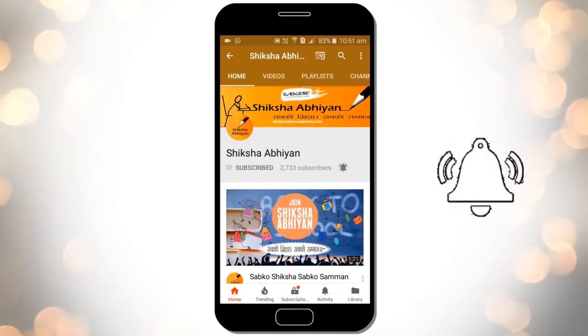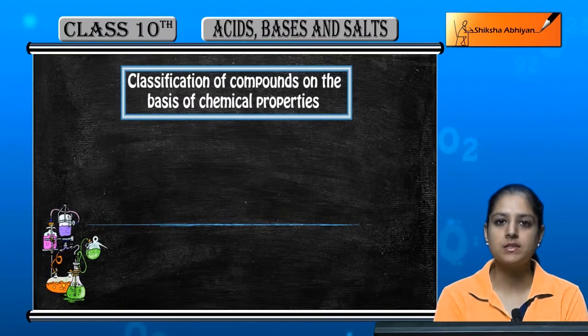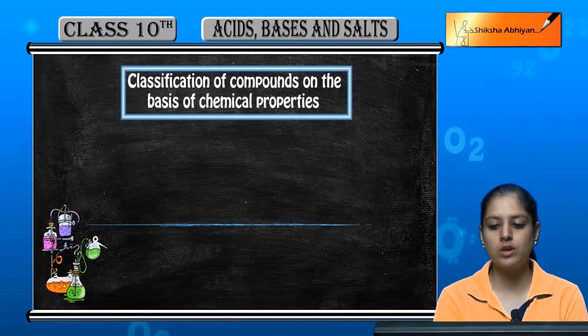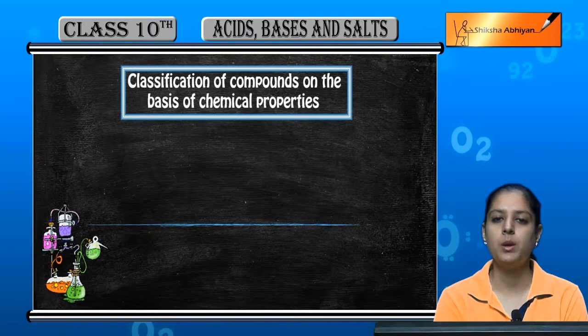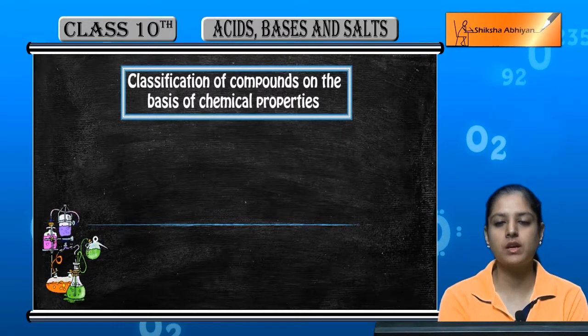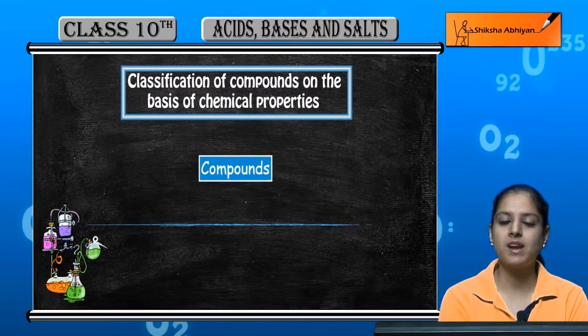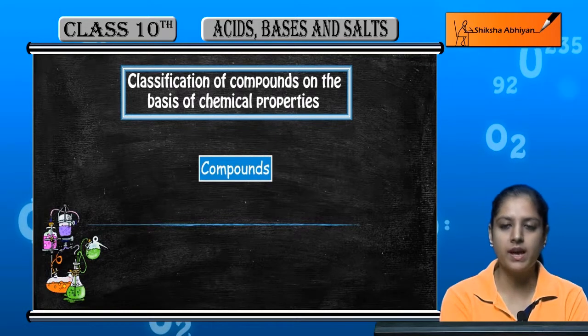So students, our first topic is classification of compounds on the basis of chemical properties. The classification of compounds: compounds can be classified into three types.